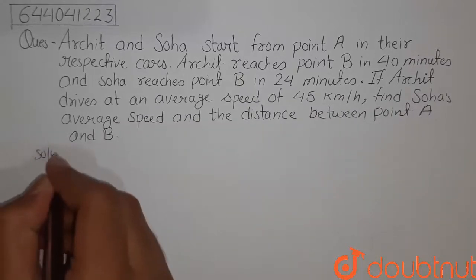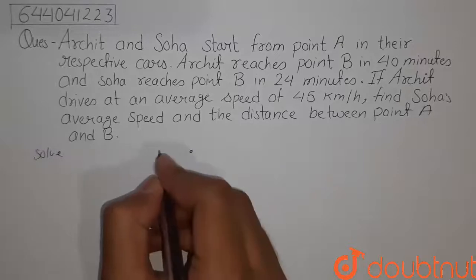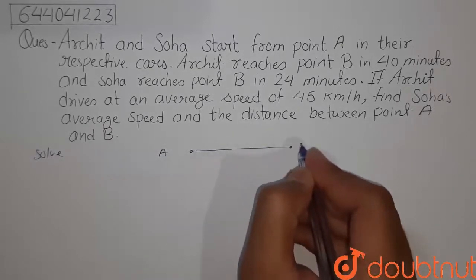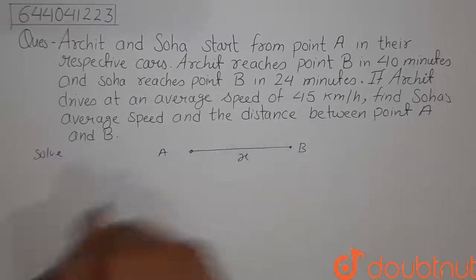In this question, suppose this is point A from where Archit and Soha start and this is point B where they finish their race. So this distance is X.